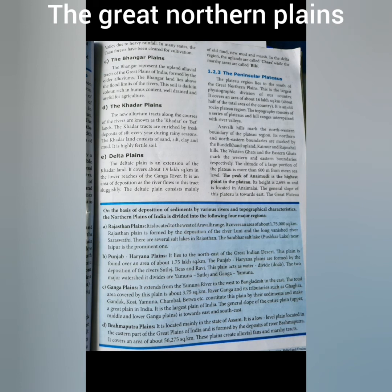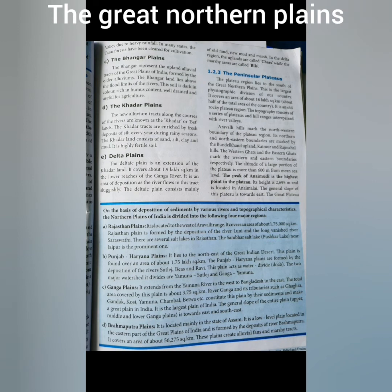The Punjab-Haryana Plains lie to the north-east of the Great Indian Desert. The Punjab-Haryana Plains are formed by the deposition of rivers Sutlej, Beas and Ravi. That is why this plain acts as a water divide.